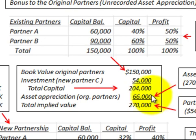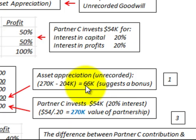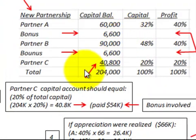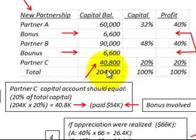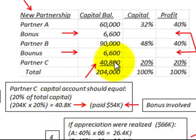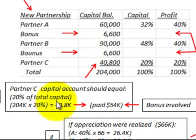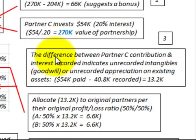The total implied value is $270,000 and total capital invested is $204,000, so subtracting $204,000 from $270,000 gives us $66,000 worth of asset appreciation going to the original partners, which suggests there's a bonus. Partner C's capital amount should equal 20% of the total capital of $204,000, which is $40,800. But they paid $54,000, so the difference between $40,800 and $54,000 confirms there's a bonus involved.